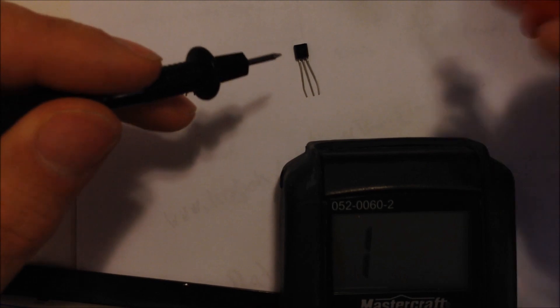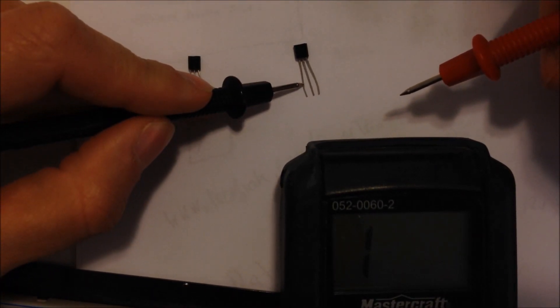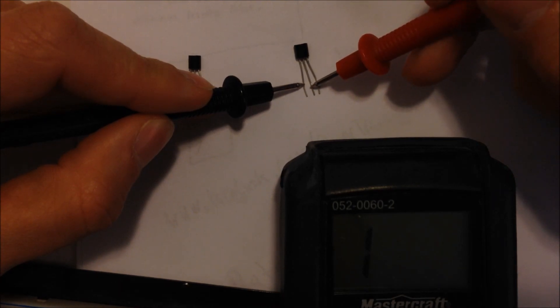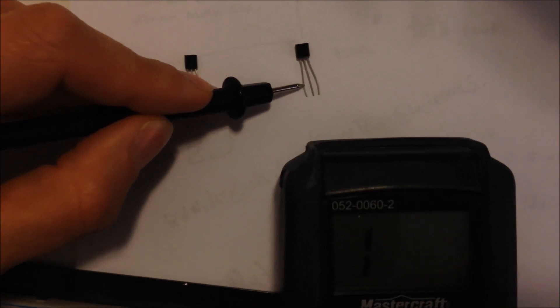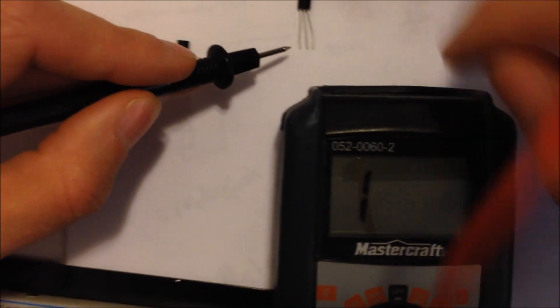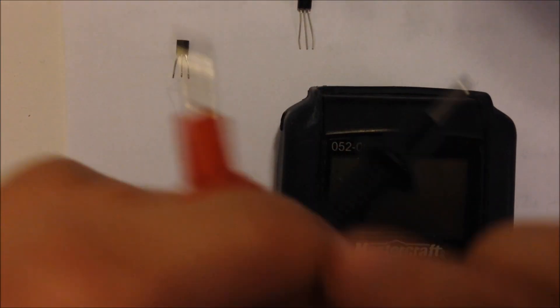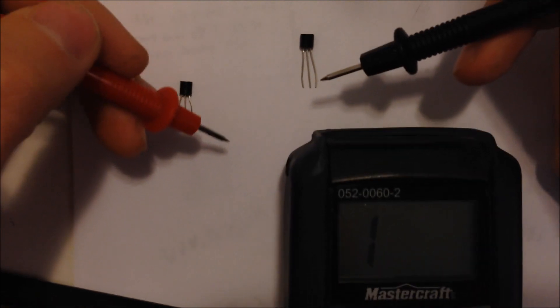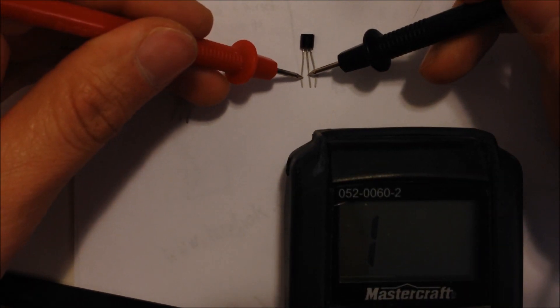What you want to do is take the leads, positive and negative leads, and put them on the transistor. I'll start with this first transistor here. I'll put my negative lead on one of these legs here and the positive on the base. We don't get any reading on the meter there. So now if I flip the leads around, I'll put the negative lead onto the base...